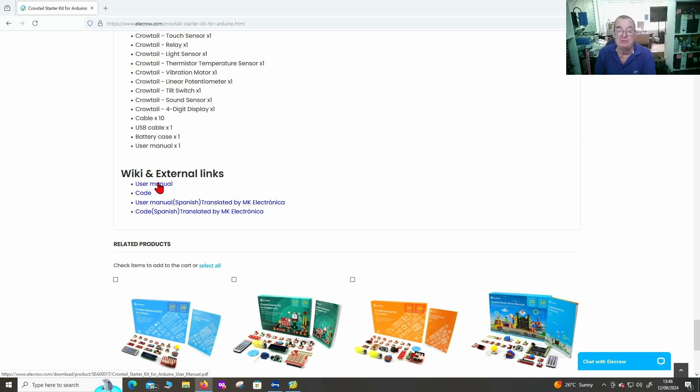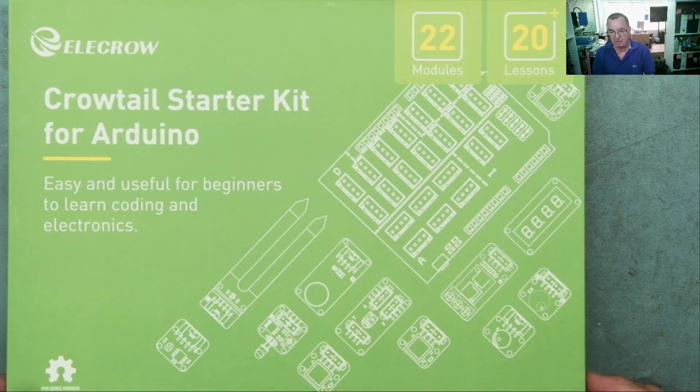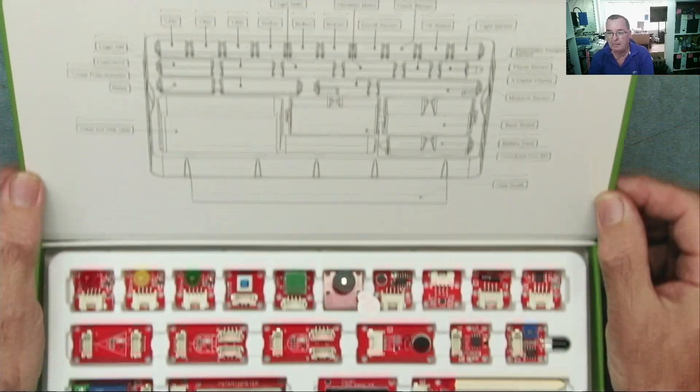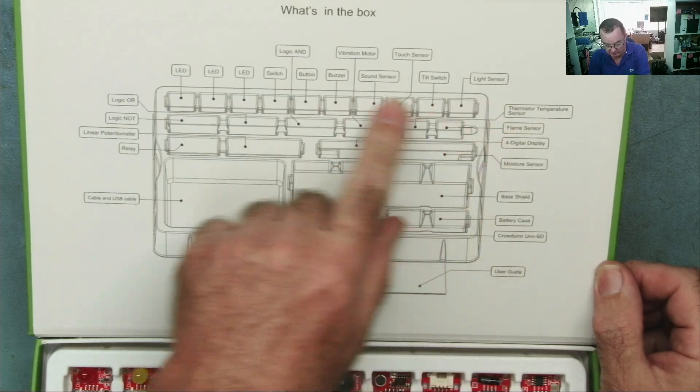Here's a list of the various sensors we have, various modules. No soldering required, so this is really meant for learning electronics. The user manual is online, so we'll be taking a look at that a little bit later, and the code also. But for now let's see what's inside the box. It's nicely labeled on here on the lid what goes where.